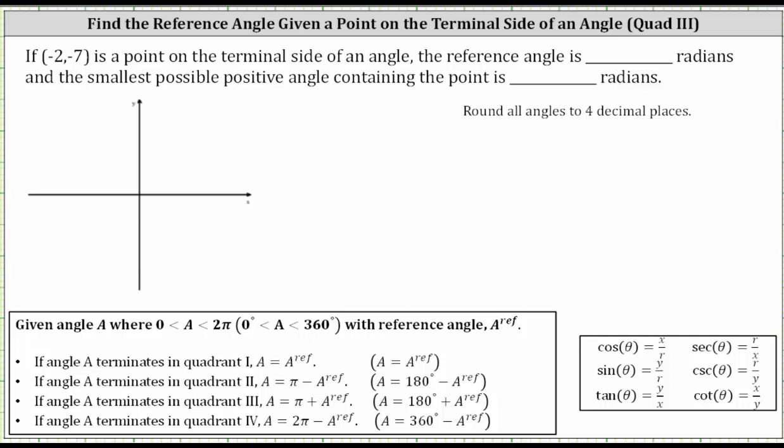If negative two comma negative seven is a point on the terminal side of an angle, what is the reference angle and what is the smallest possible positive angle containing the point?